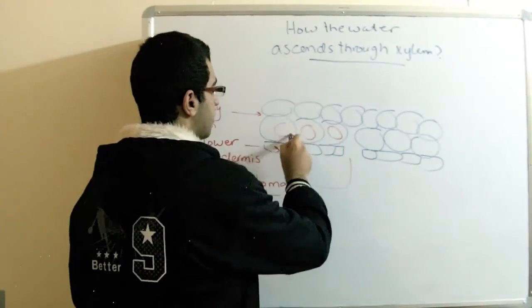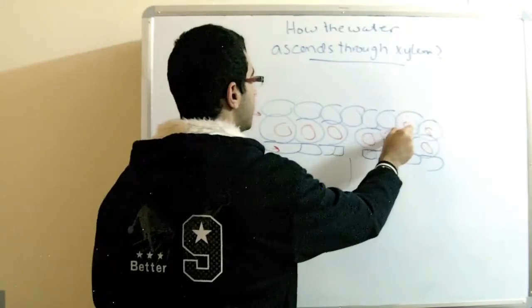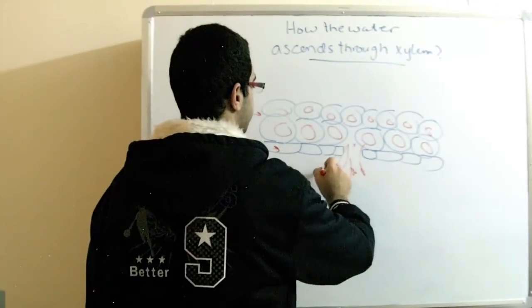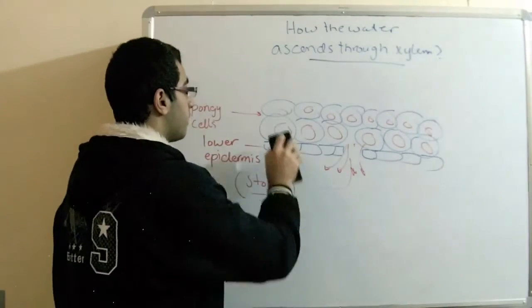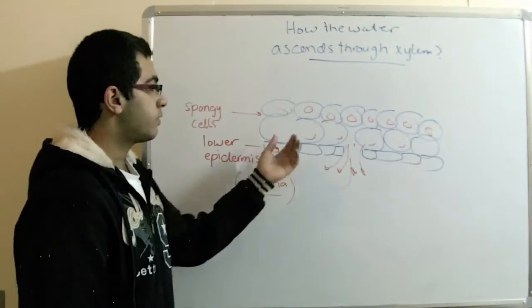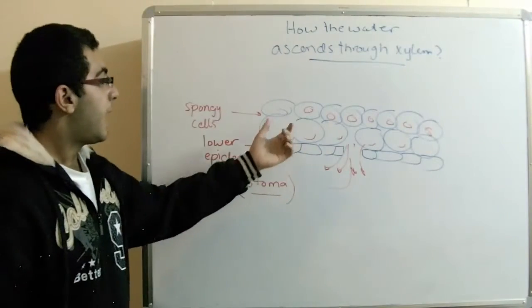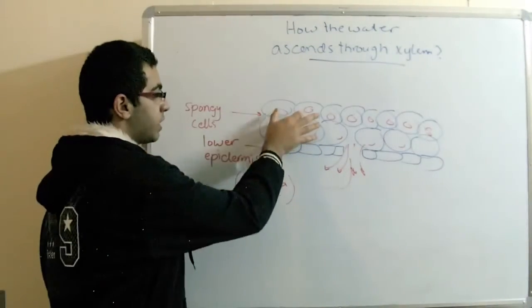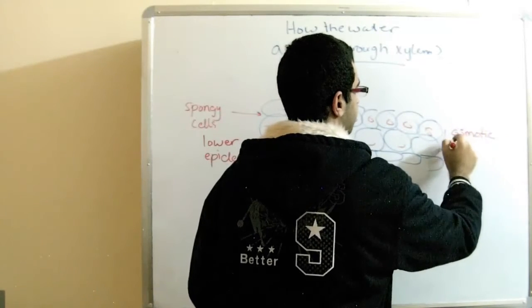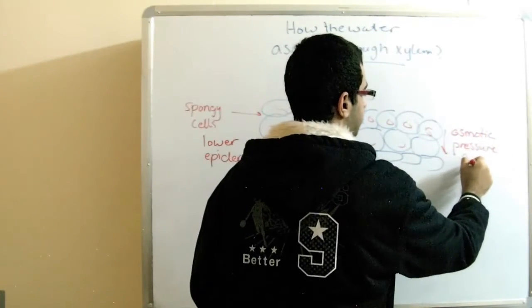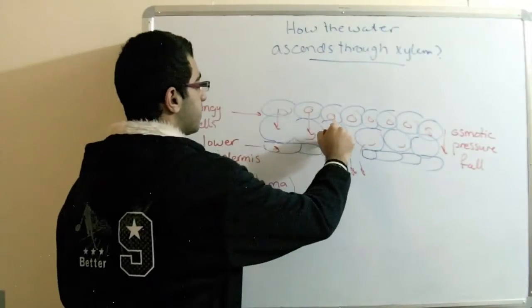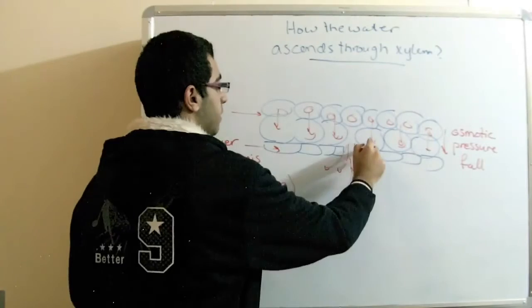When these cells contain water as they absorbed, they lose this water through the transpiration. So when they lose the water through the transpiration, their concentration of the solution inside them increase, and the ones behind them will contain water. So this will form the osmotic pressure pull. And this osmotic pressure pull will lead the water to pass from these cells to the ones next to them. And then they are transpired again.